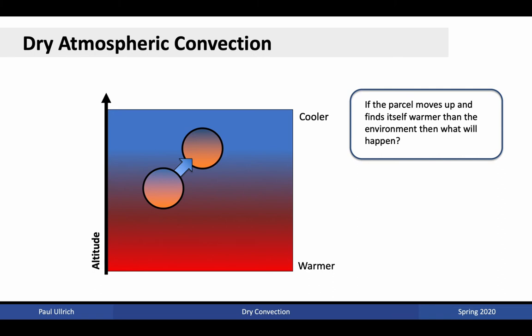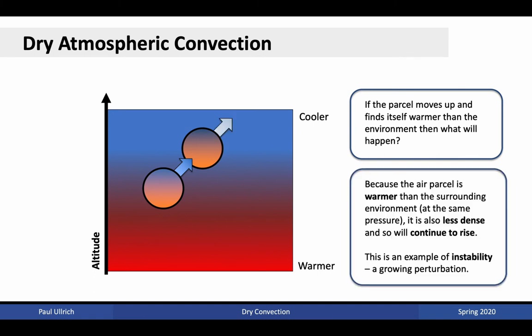Consider a second situation: if the parcel moves up and finds itself warmer than the environment, then because the fluid parcel is warmer, it is also less dense. Thus buoyancy indicates the parcel will continue to rise. This is an example of instability — a growing perturbation. Comparing to the ball analogy, this is analogous to the ball on top of the hill: the initial perturbation grows with time as the ball rolls down the hill.